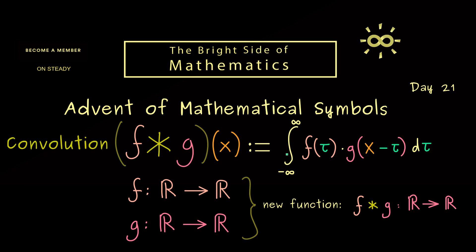And that's what we have. This product of the two functions is integrated. And if this integral exists for all points x in R, we have the convolution.